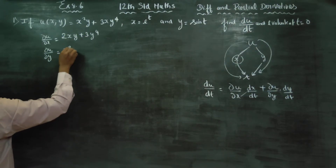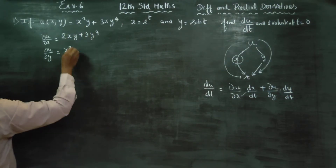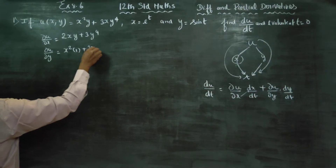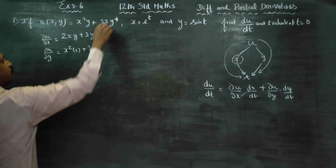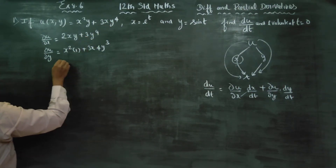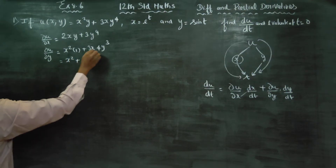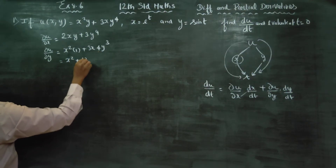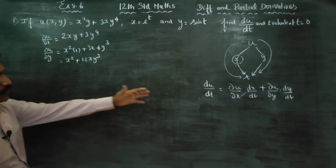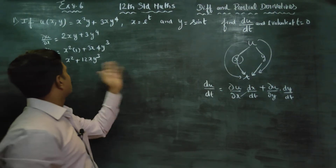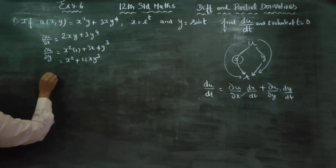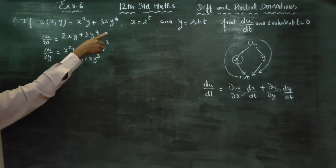Then ∂u/∂y: x² differentiates to be constant, y differentiates, plus 3x times 4y³. Therefore ∂u/∂y = 12xy³.